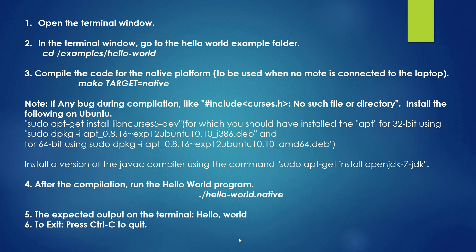The first step is to open the terminal window, then go to the folder Hello World. The Hello World folder is available inside Examples, so go to Examples then Hello World. In the Hello World folder you will have hello_world.c — the C program is available. We have to compile it and run it in the terminal window.